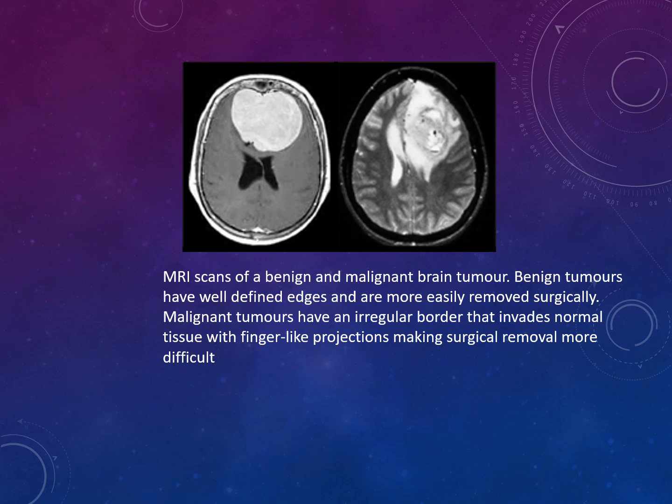MRI scans of benign and malignant brain tumours are shown. Benign tumours have well-defined edges and are more easily removed surgically. Malignant tumours have an irregular border which invades normal tissue with spindle-like projections, making surgical removal more difficult.